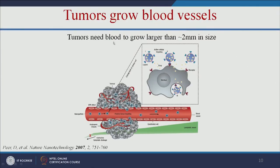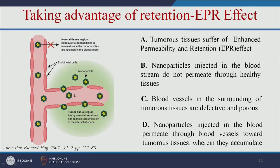Tumor cells need blood to grow larger than 2 mm in size, and they have damaged, leaky blood vessels. The tumor tissue suffers from enhanced permeability and retention — the EPR effect. We can take advantage of this EPR effect: nanoparticles injected into the blood will go only to the tumor tissue region. In normal tissue there are no leaky blood vessels, but in tumor tissue the leaky vasculature allows nanoparticles to accumulate, release the drug, and kill the tumor cells. This is called passive targeting.